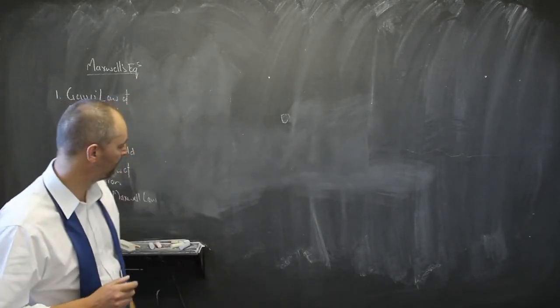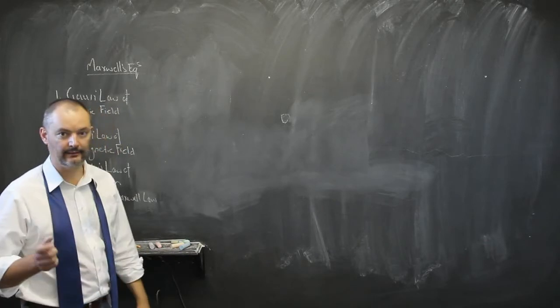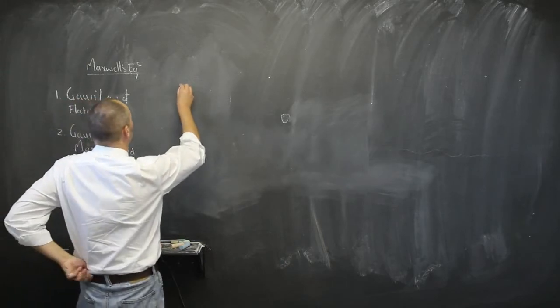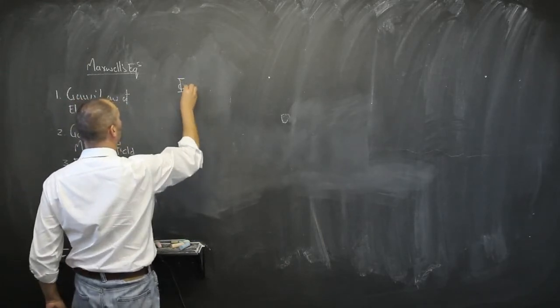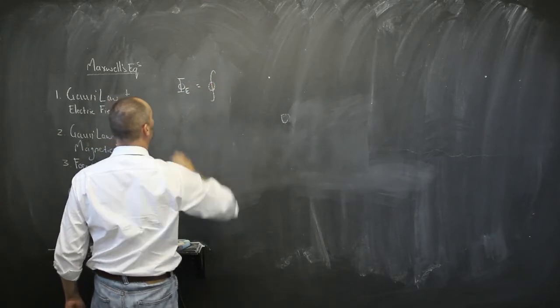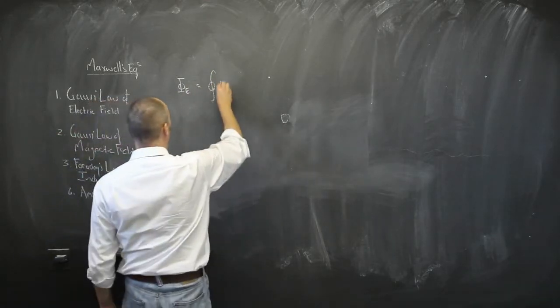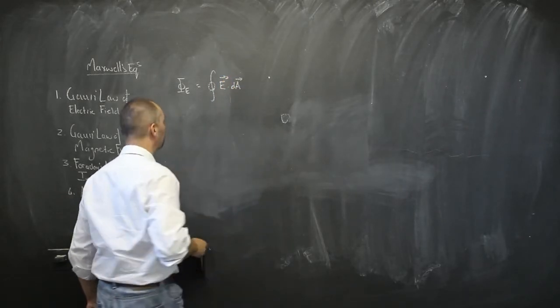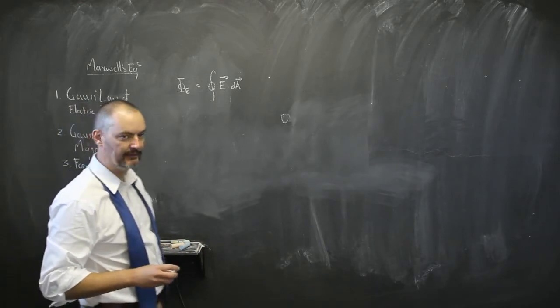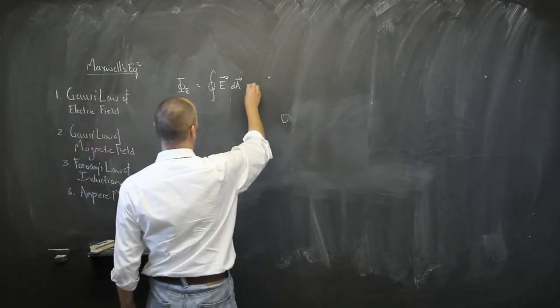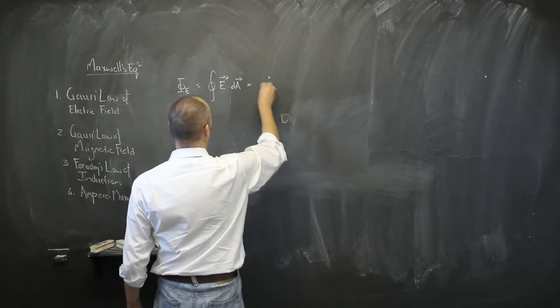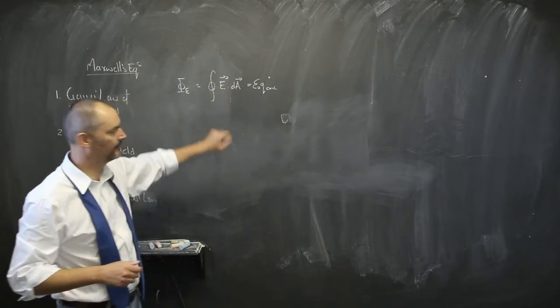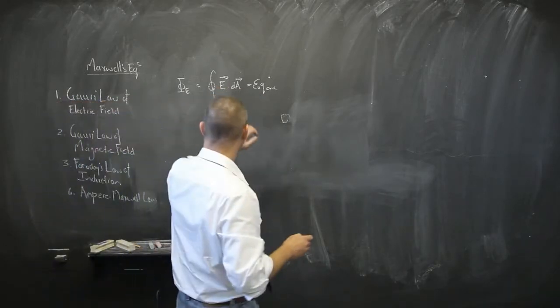Now let's start quickly with Gauss's law of the electric field, which states that electric flux equals the integral over a whole surface of the dot product of the electric field and the area vector. And what we will see is that equals q enclosed over epsilon zero, the enclosed charge. Let's quickly look at how we derive this.